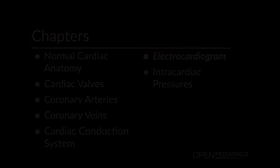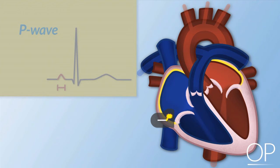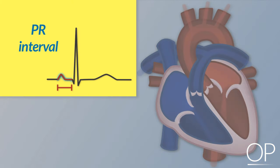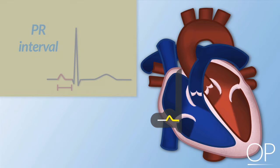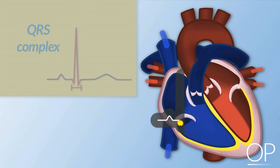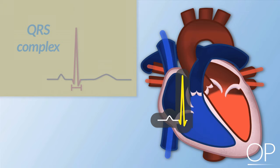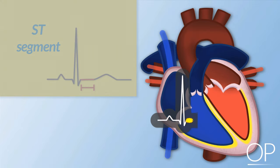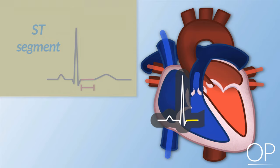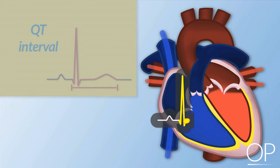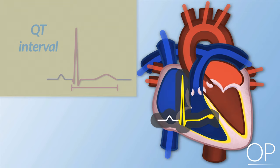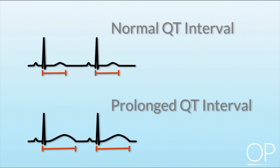Electrocardiogram. The P wave of the electrocardiogram represents atrial contraction. The PR interval is a measure of time from the onset of atrial contraction to the onset of ventricular contraction. The QRS complex represents the complete depolarization of the ventricles. The ST segment represents the complete repolarization of the ventricles and may indicate heart muscle ischemia. The QT interval represents the complete depolarization and repolarization of the ventricles. A prolonged QT interval is a risk factor for ventricular arrhythmias and sudden death.